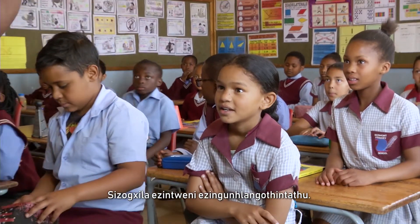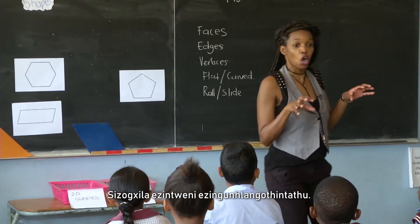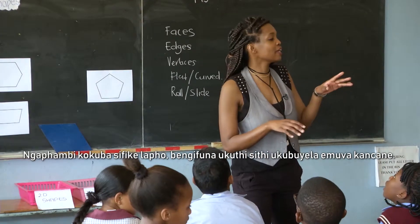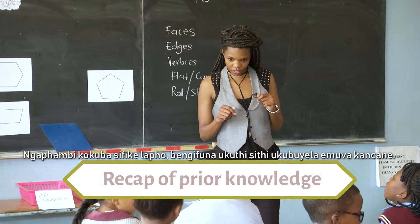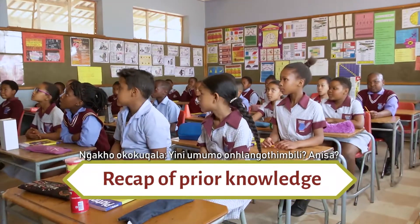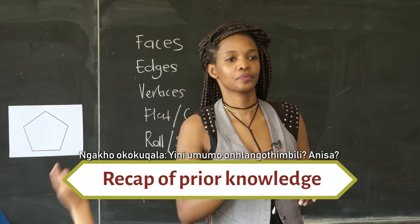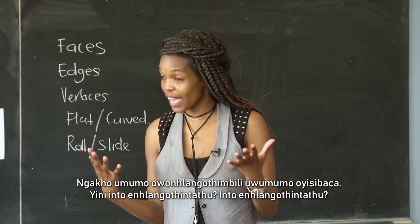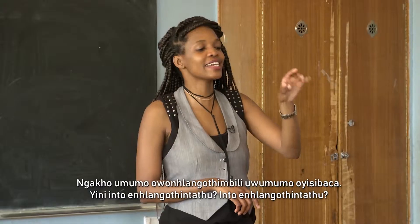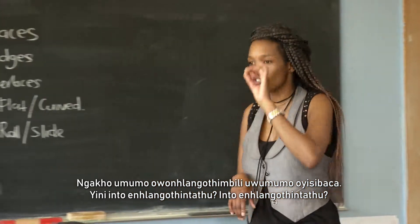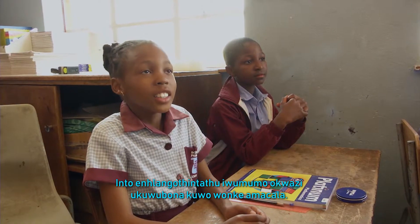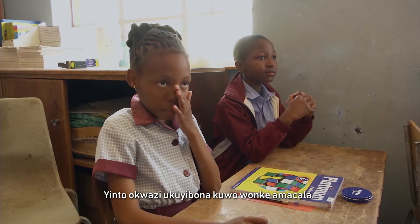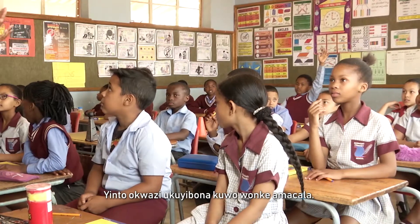We are going to be focusing on 3D objects. Before we get there, I just want to take us a bit back. Firstly, what are 2D shapes? Anissa? A 2D shape is a flat shape. So, a 2D shape is a flat shape. What is a 3D object? A 3D object is a shape where you can see all the sides.